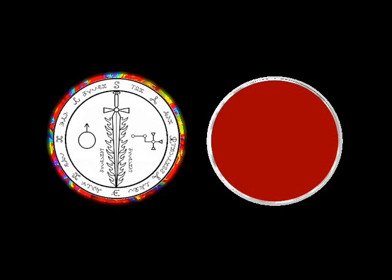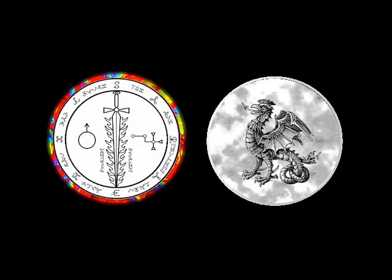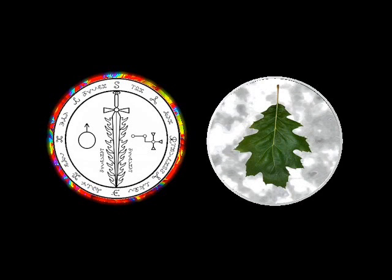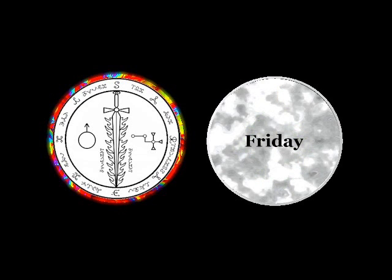Color: Crimson. Animal: Basilisk. Plant: Oak. Day: Friday. Hour: 4 PM to 7 PM.